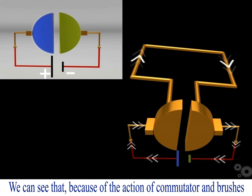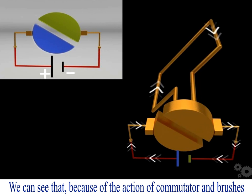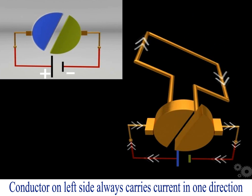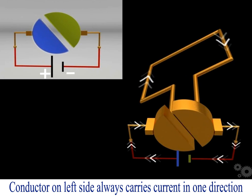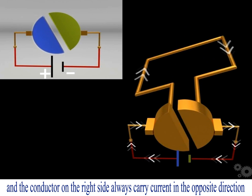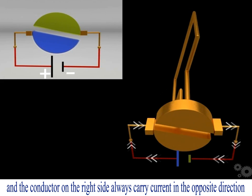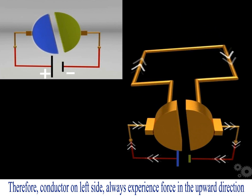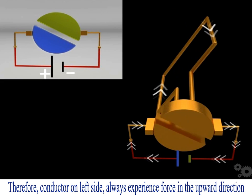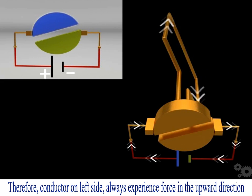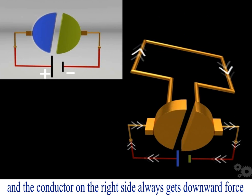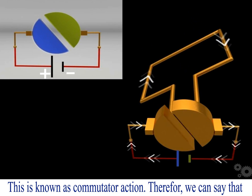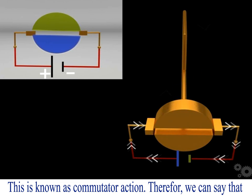Because of the action of the commutator and brushes, the conductor on the left side always carries current in one direction and the conductor on the right side always carries current in the opposite direction. Therefore, the conductor on the left side always experiences force in the upward direction and the conductor on the right side always experiences downward force. This is known as commutator action.